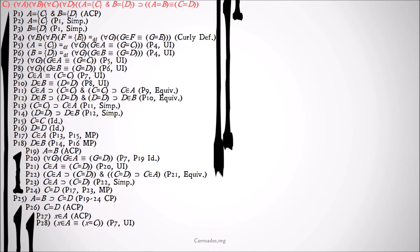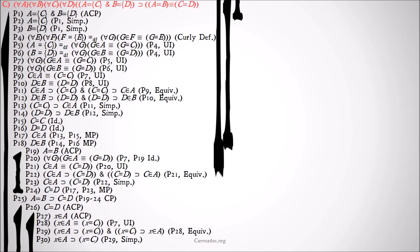We need to show that all members of each set are equal, using the axiom of extensionality. So we want to prove: X is a member of A implies X is a member of B, and X is a member of B implies X is a member of A. We take premise 7, universal instantiation, instantiating G to X, then split the equivalence into two conditionals and simplify down to: X is a member of A implies X equals C.